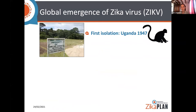Zika virus was first isolated in 1947 from a sentinel monkey in the Zika forest of Uganda. And for the next 60 years, it was considered an innocuous virus because there were only a few — actually less than 20 reported human cases — and all of them were associated with mild and self-limiting symptoms.